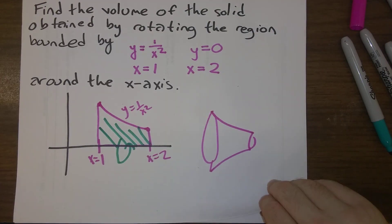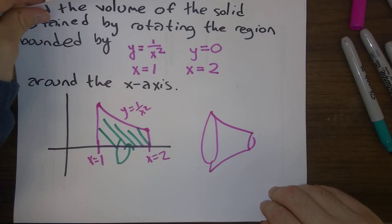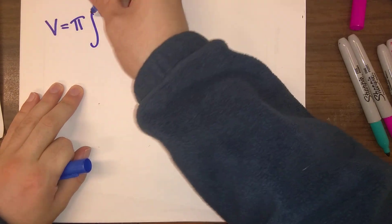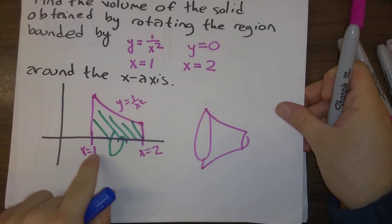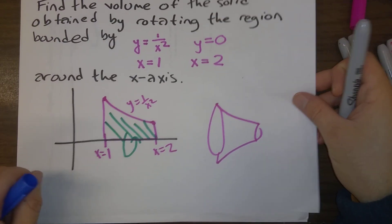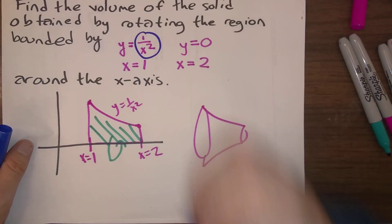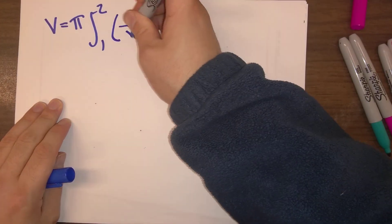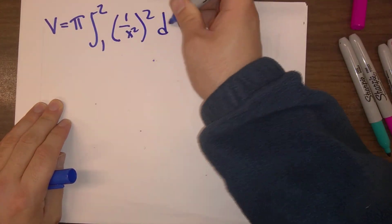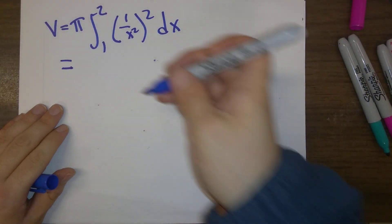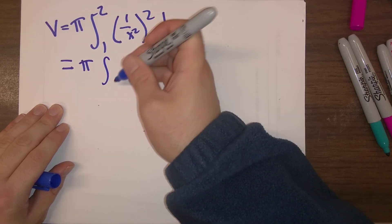And so all we have to do is plop stuff into this formula and integrate. So what do we end up with? We end up with v is pi times the integral from x running from 1 to 2, and f(x) here is 1 over x squared, and we need to square that. So what do we get when we carry out this calculation?